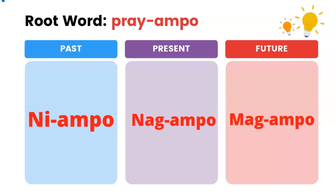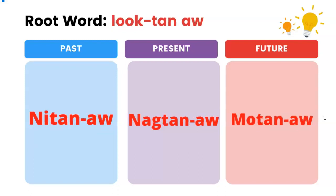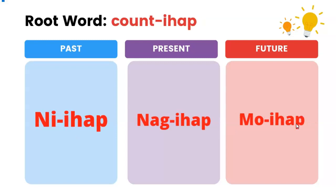Pray — ampu. Past: niampu. Present: nagampu. Future: magampu. Look — tanaw. Past: nitanaw. Present: nagtanaw. Future: mutanaw.